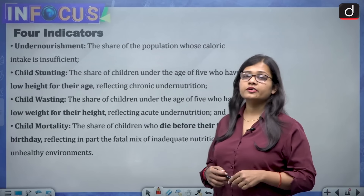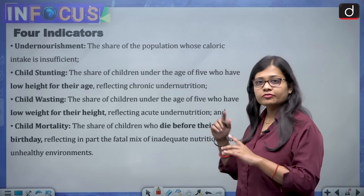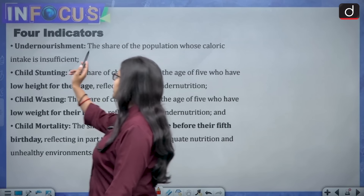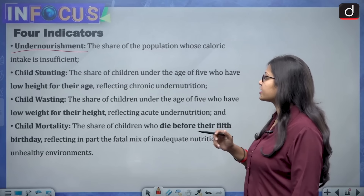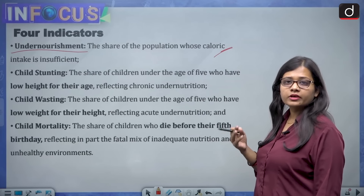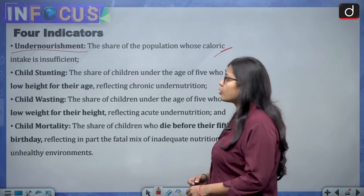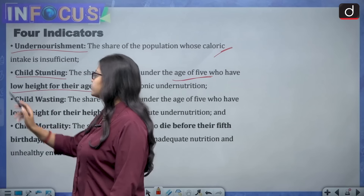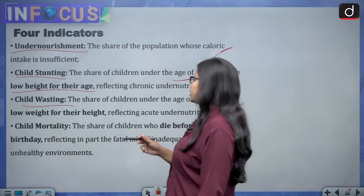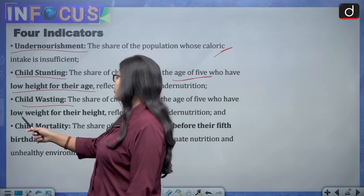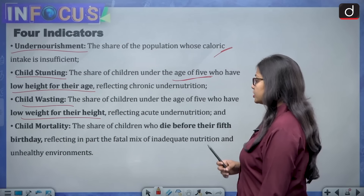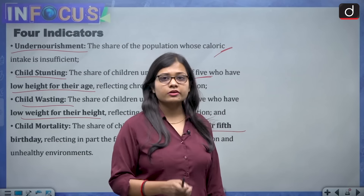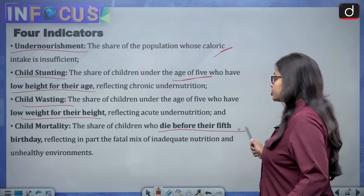The Global Hunger Index is based on four indicators. First, undernourishment — the share of the population whose caloric intake is insufficient. Second, child stunting — children under the age of 5 who have low height for their age. Third, child wasting — children under the age of 5 who have low weight for their height. Fourth, child mortality — the share of children who die before their fifth birthday.